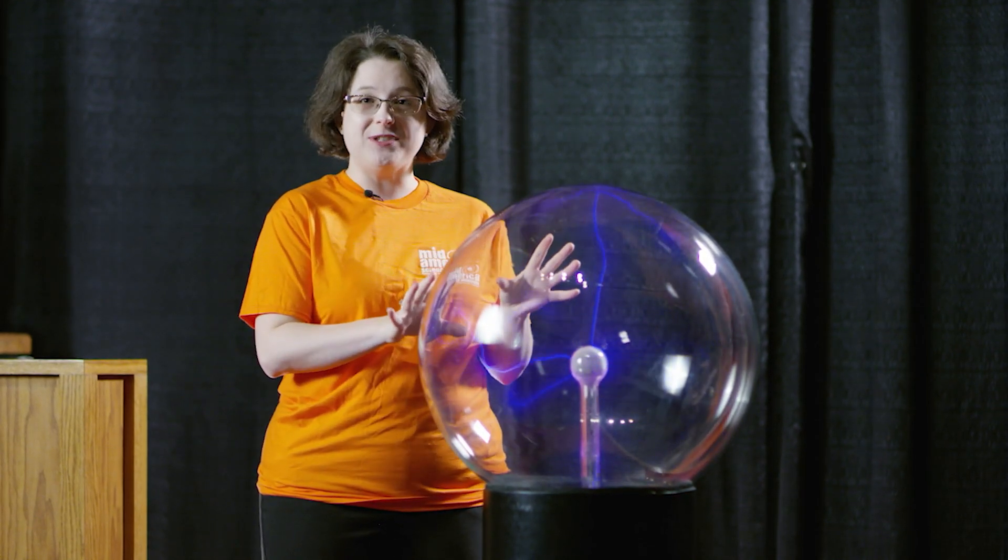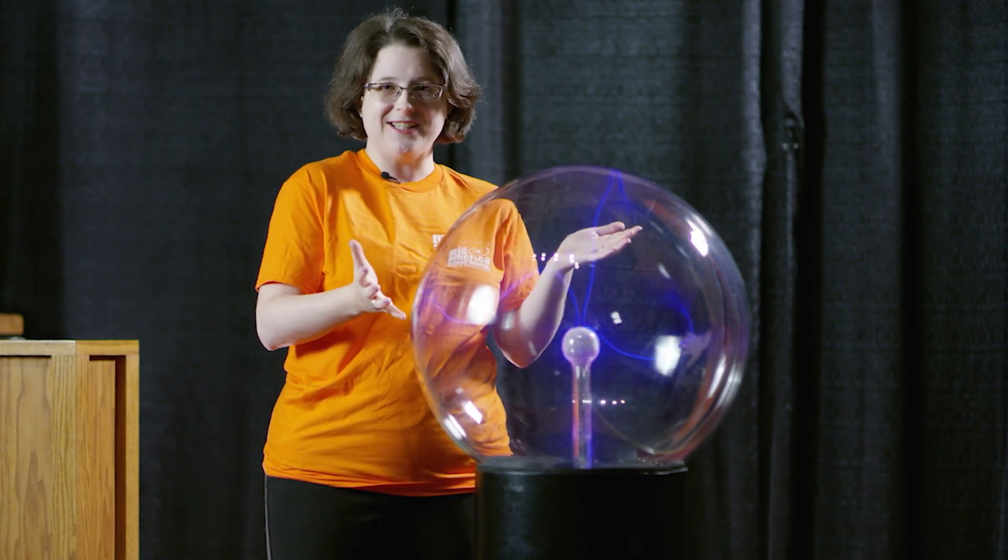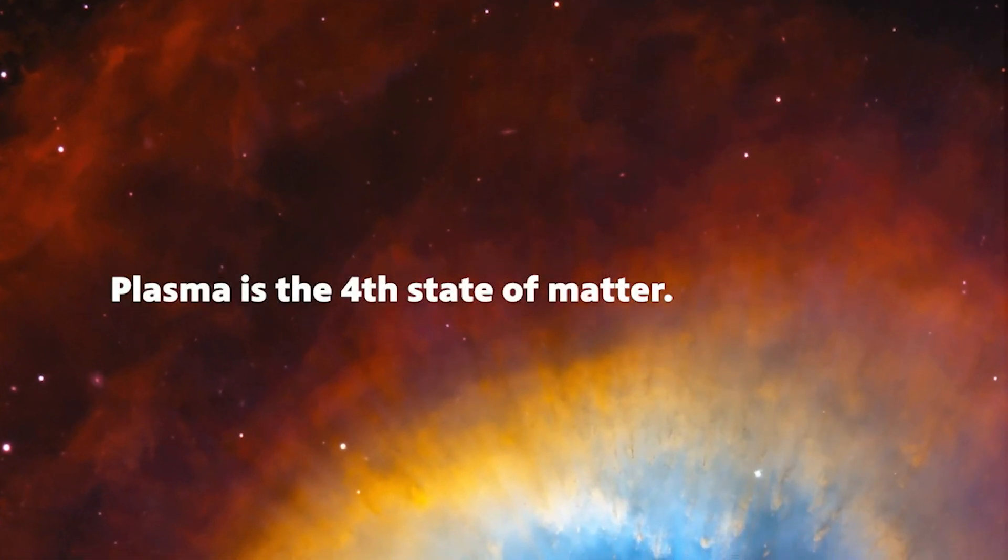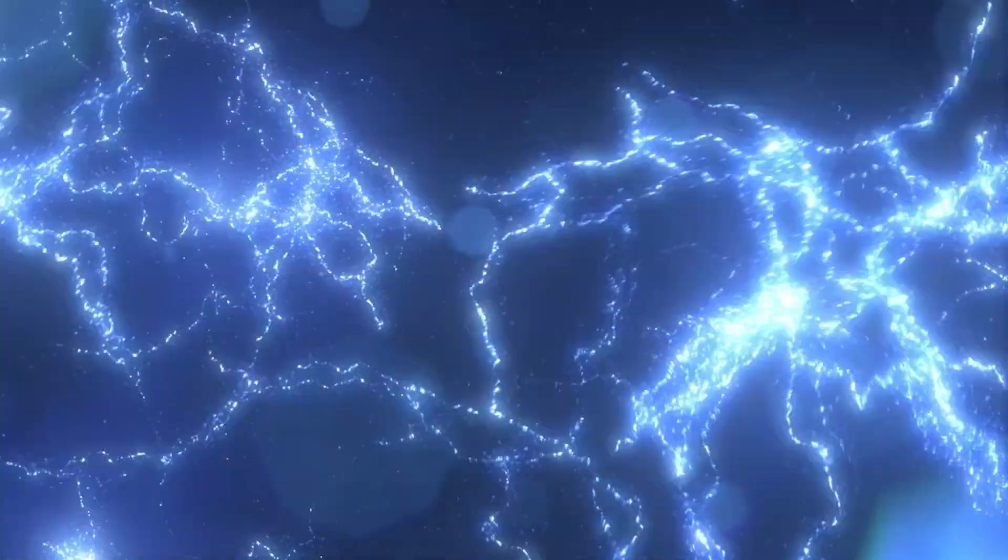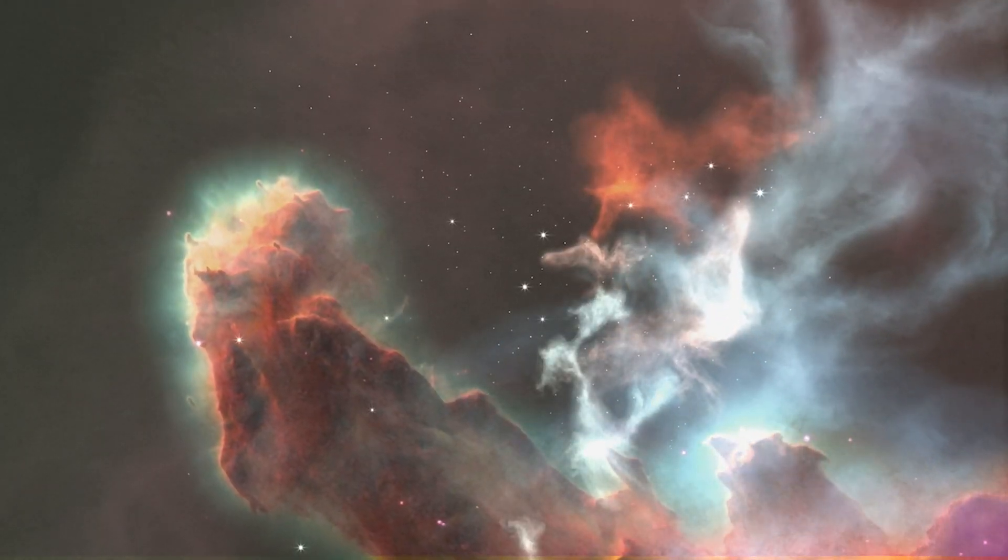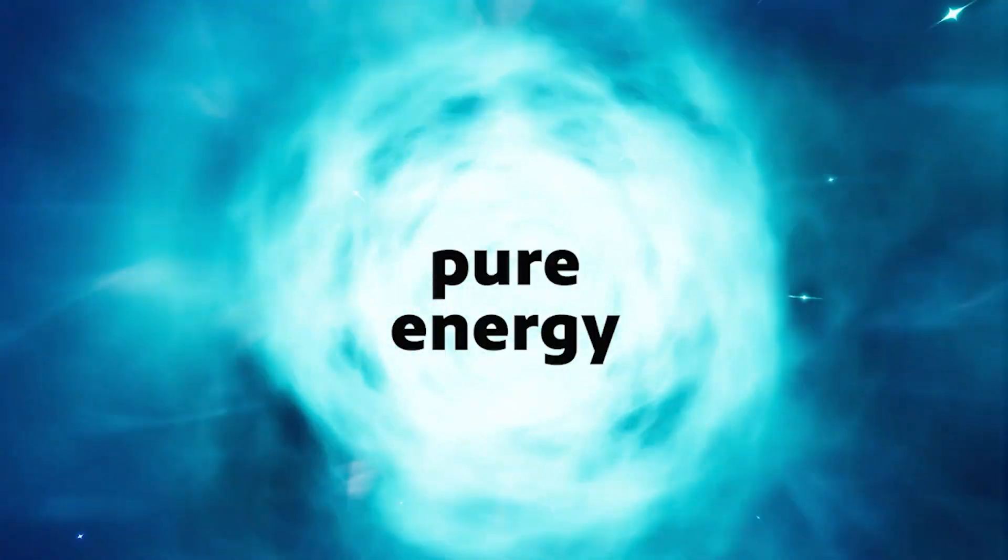So here I have one of our tools at the museum called a plasma ball. See all that purple stuff inside? It looks like a lightning bolt, doesn't it? That's because it is. See, plasma is the fourth state of matter. It's what you find in lightning bolts, in nebulas, in gas clouds, and even in some stars. And it's almost pure energy.